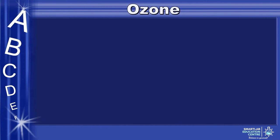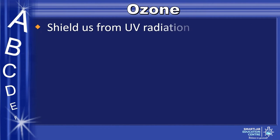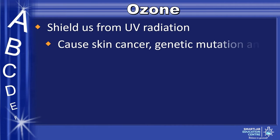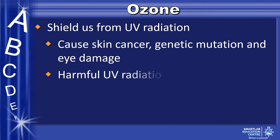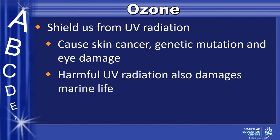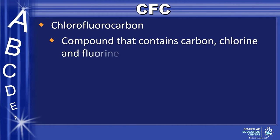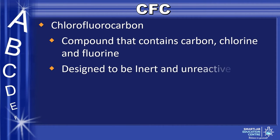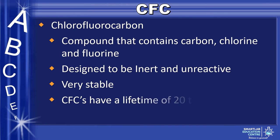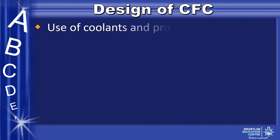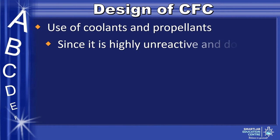Ozone helps shield us from UV radiation, as this radiation causes skin cancer, genetic mutation, as well as eye damage. It also damages marine life. Chlorofluorocarbon is a compound that contains carbon, chlorine, and fluorine. It is designed to be inert and unreactive, and it is very stable, seen in how CFCs have a lifetime of 20 to 100 years. CFCs are used in coolants and propellants since they are highly unreactive and do not react with the chemicals being propelled.